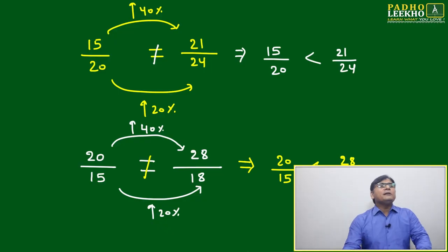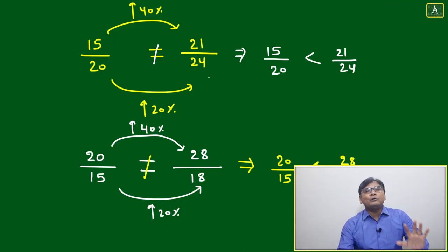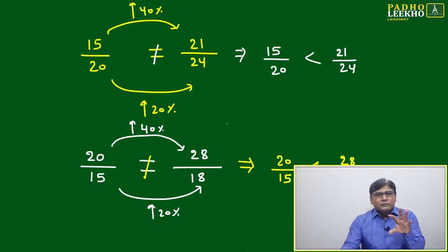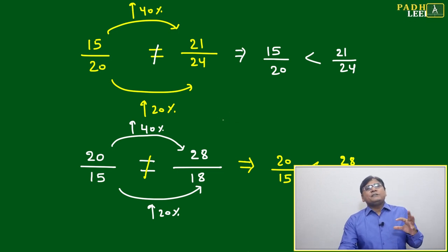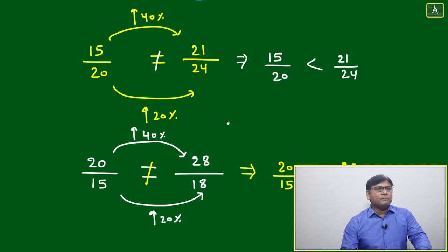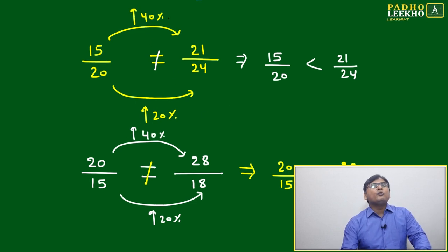Now 15 by 20 and 21 by 24, are these two ratios the same or not? How can we say? We have to justify: 15 to 21 is around 40 percent increase, 20 to 24 is around 20 percent increase.